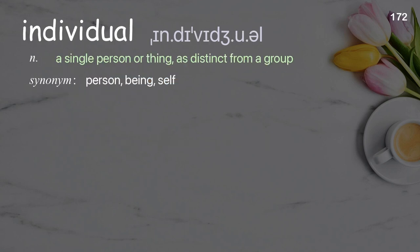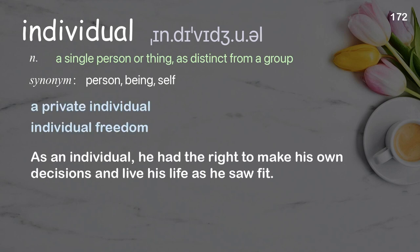Individual: A single person or thing as distinct from a group. Examples: A private individual, Individual Freedom. As an individual, he had the right to make his own decisions and live his life as he saw fit.